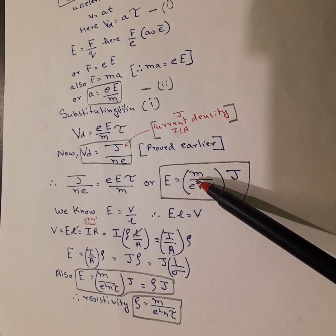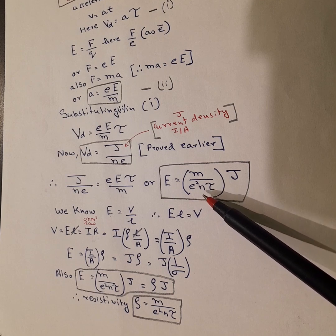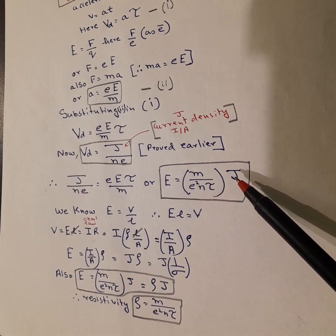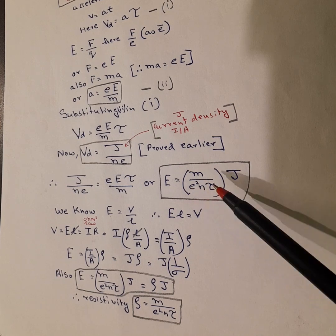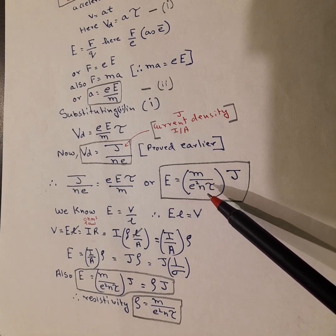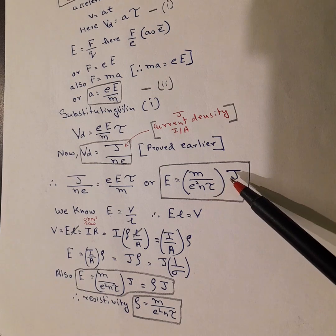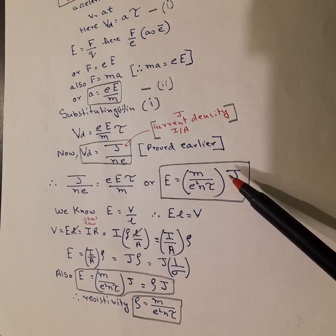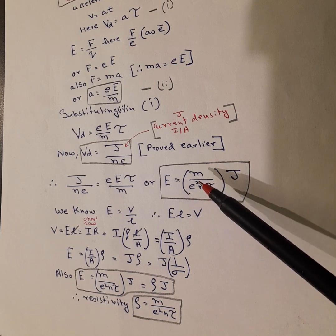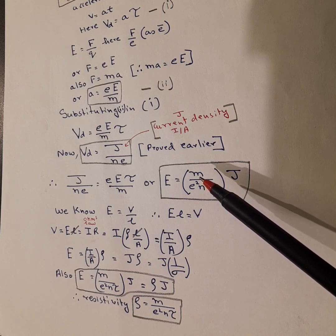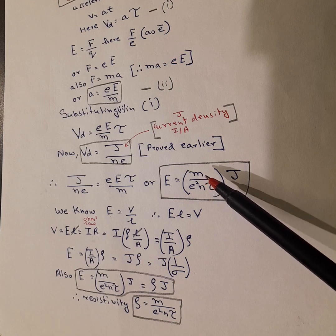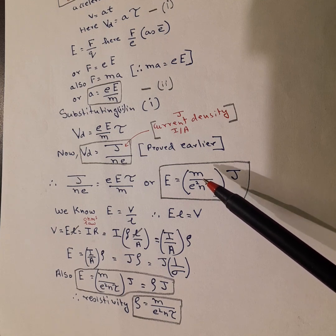We take it in terms of electric field intensity. So the formula comes to this: E is equal to M over e square N tau J, where this is mass of electron, this is charge of electron, this is number of electrons, this is the time gap, average time between two successive collisions, and J is current density. This is the formula which you really are going to focus in, understand it, because it may be required for solving some JEE or NEET physics numericals.